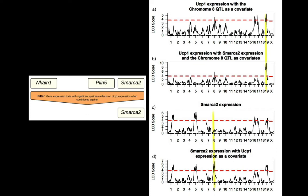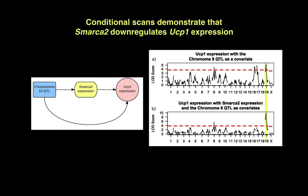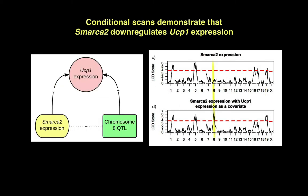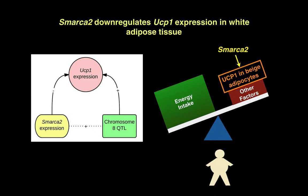To reduce the candidates further, we looked at conditional genome scans. We found that conditioning UCP1 against SMARCA2 expression significantly increases the peak on chromosome 19, suggesting a relationship in which SMARCA2 down-regulates UCP1, and that the chromosome 19 genetic locus affects the expression of both — which makes sense because SMARCA2 is located on chromosome 19. In the next conditional scan, conditioning SMARCA2 expression against UCP1 expression revealed a big peak on chromosome 8 emerging, again indicating that SMARCA2 down-regulates UCP1 and that the chromosome 8 QTL is upstream to UCP1 expression — consistent with UCP1 being located on chromosome 8. Taken together, these results indicate that SMARCA2 down-regulates UCP1 expression in white adipose tissue.